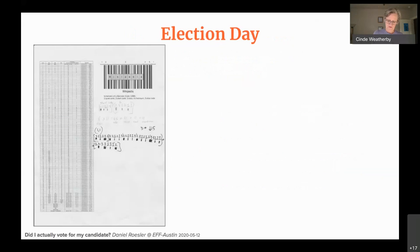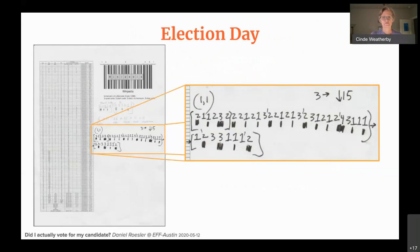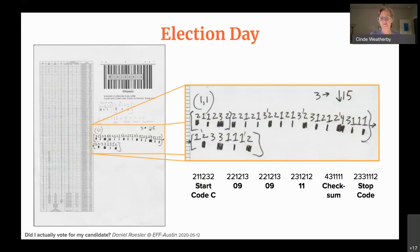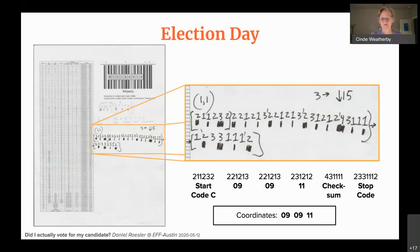This is the actual cheat sheet I took into the primary — the decoding table, some notation for reference, and then I wrote down one of the barcodes from my printed ballot using shorthand notation. The numbers add up to 11 per character, and tick marks are character delimiters. That translates into: start code C, position 9, position 9, page 1, side 1, then checksum and stop code. That's what I copied down from the ballot before I voted.